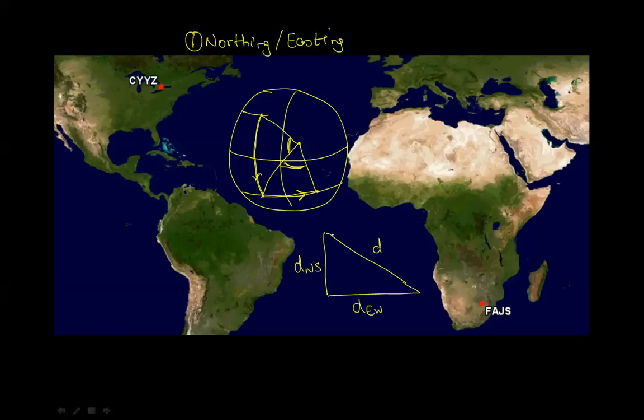Then the great circle distance will be calculated using the Pythagorean theorem. As you can see, this is not going to be very accurate because you cannot flatten a sphere on a map without some distortion. But let's continue anyway with the Northing and Easting method. The difference between the north-south latitudes is 69.81 degrees, and the difference between the east and west longitudes is 107.872 degrees.